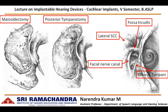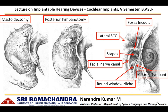At this point, the surgeon will be able to locate the stapes and round window niche. If the round window is not visible, the surgeon can use cochleostomy in order to insert the electrode array.